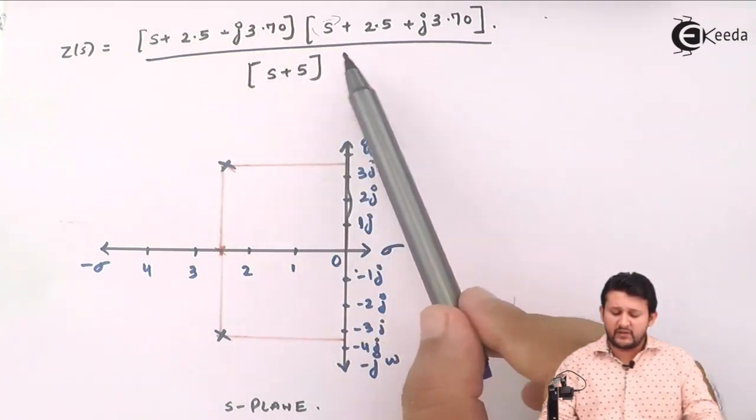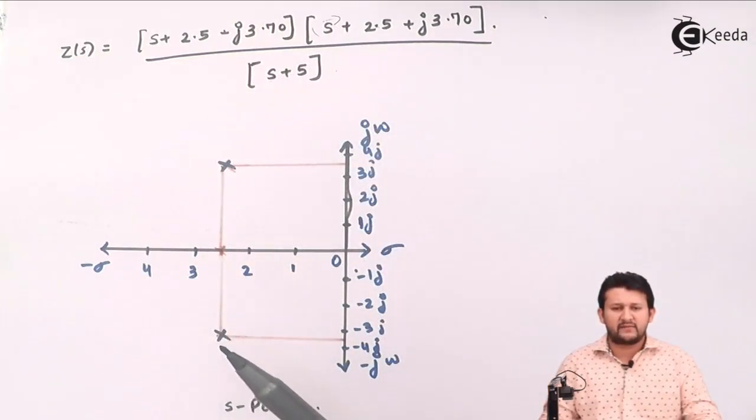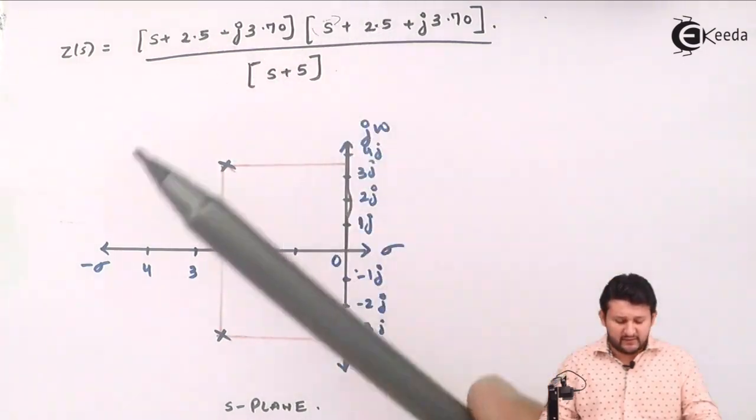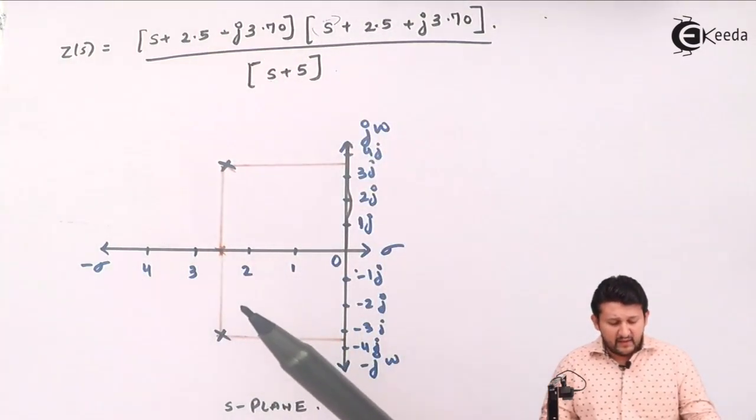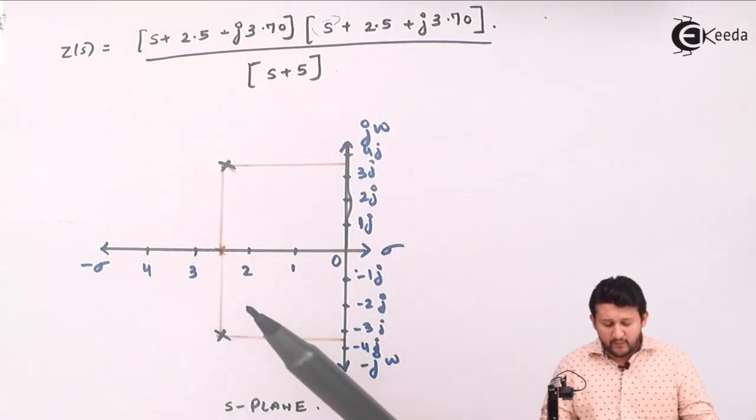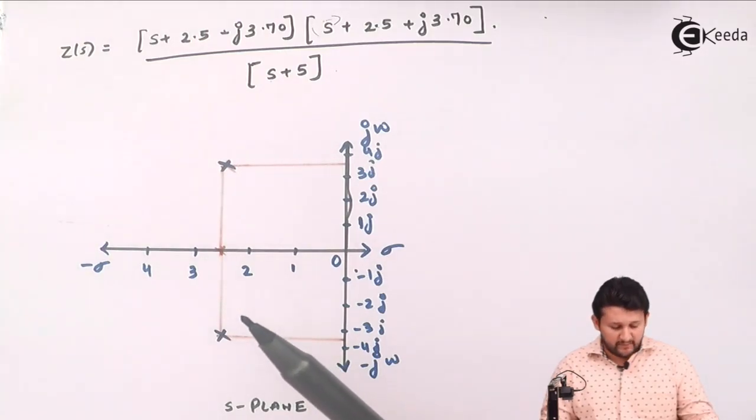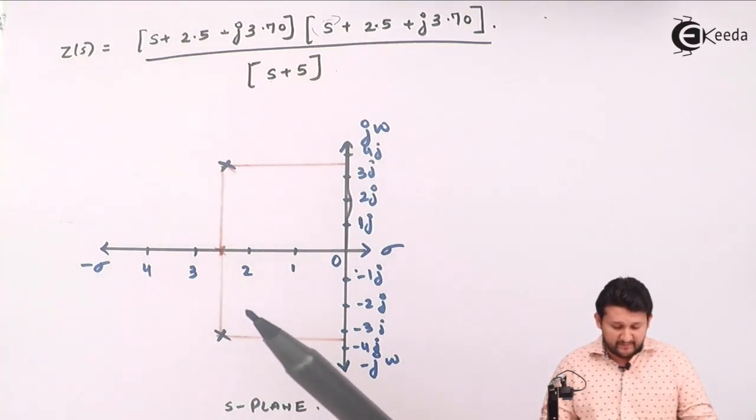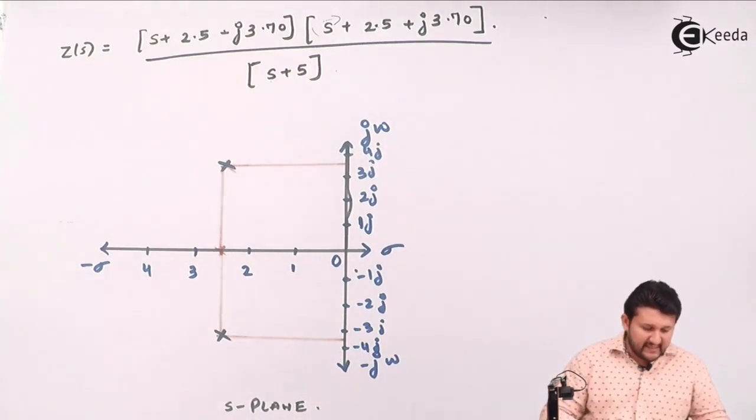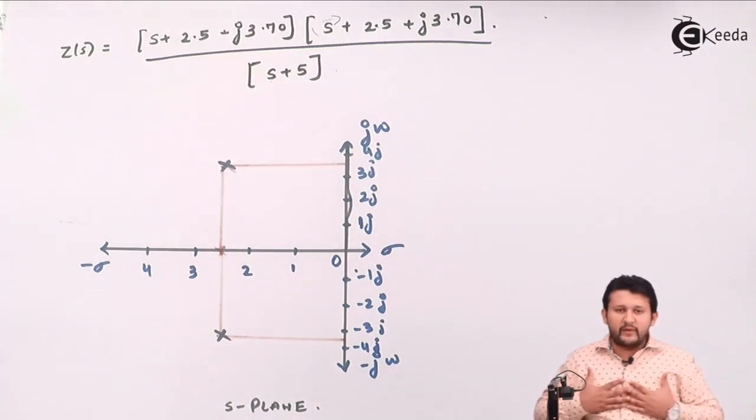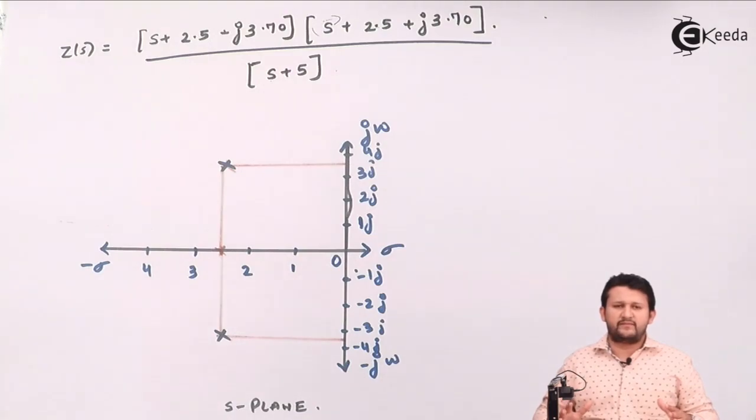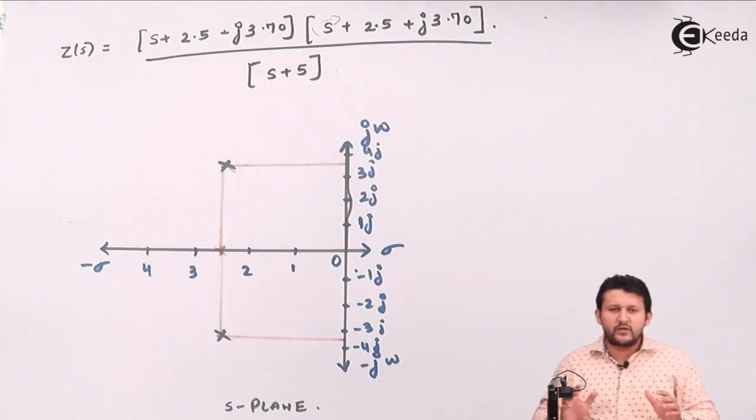So S plus 5 equal to 0, so S equal to minus 5. So I have three values. My question says, if I need to plot it, I need to get the value of poles and zeros. For that, I need to know, my dear friend, where do I get my zeros and where do I get my poles. So the logic says, from numerator you get zeros and from denominator you get poles.